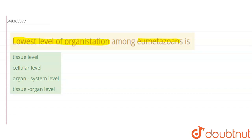So the question asks us to find out the lowest level of organization. Here we have the options: tissue level, cellular level, organ system level, and tissue organ level. First of all, we need to know what are umetazoans.